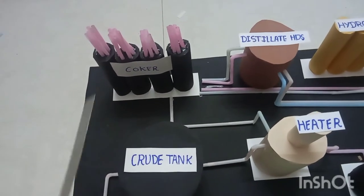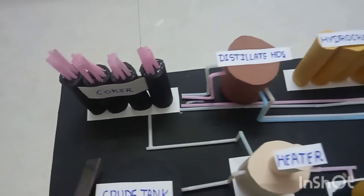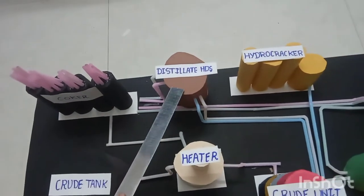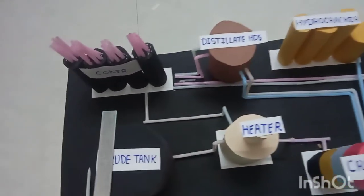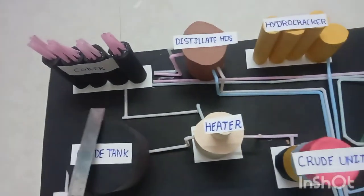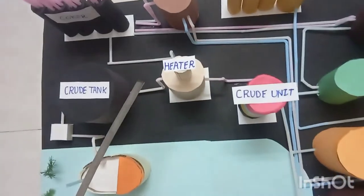This is coker. Coker converts residual oil from the distillate HDS into low molecules like hydrogen gas, naphta, petroleum coke, etc.